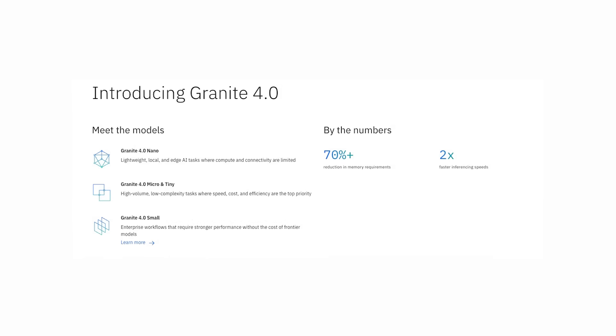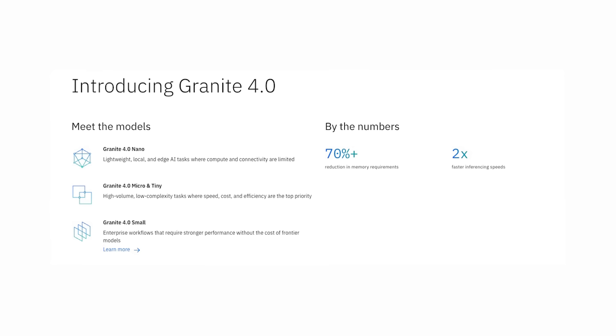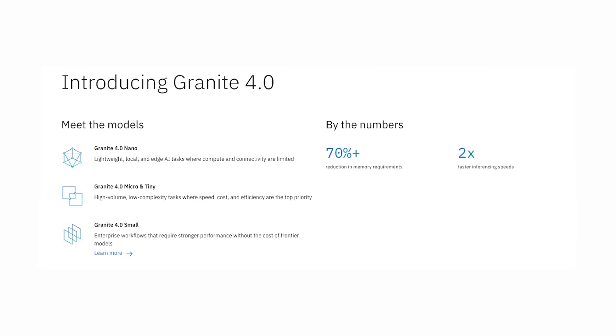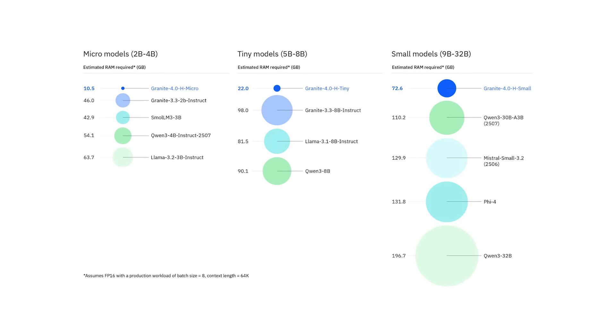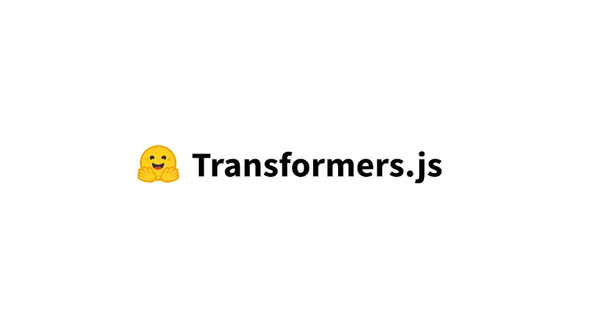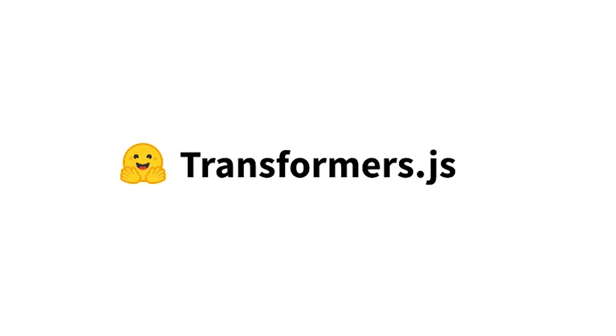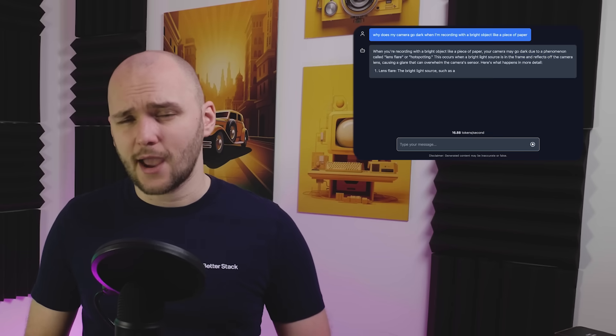That matters if you want to deploy them inside finance, healthcare, or government environments. From a practical standpoint, the efficiency gains are the real story. Lower memory usage means more people can run these models on smaller GPUs or even CPU-optimized setups — faster inference, lower latency, and lower operational costs. You can even run them locally offline in your browser using the transformers.js library. Richard already made a great video on how to get started with Transformers.js, so be sure to check that one out as well.